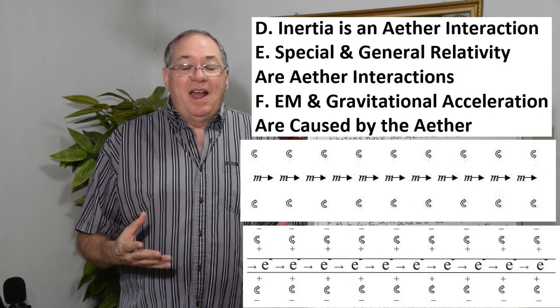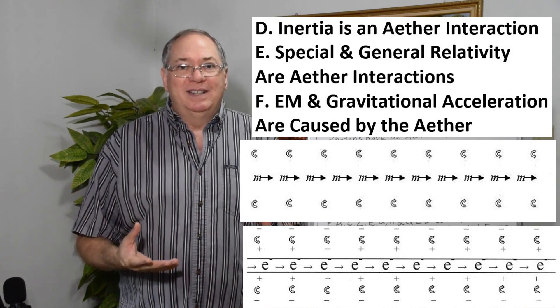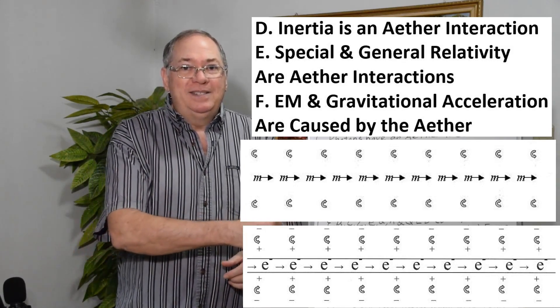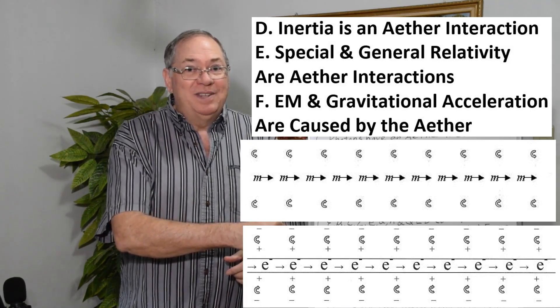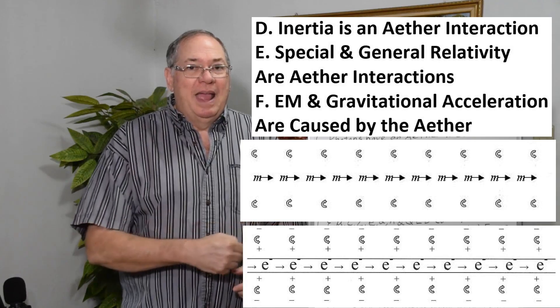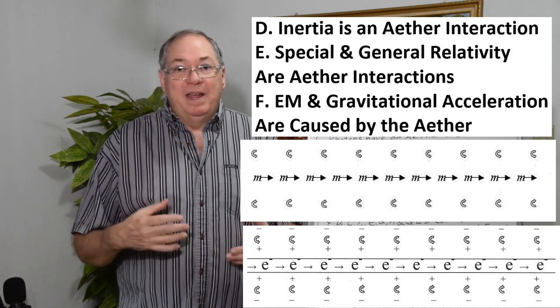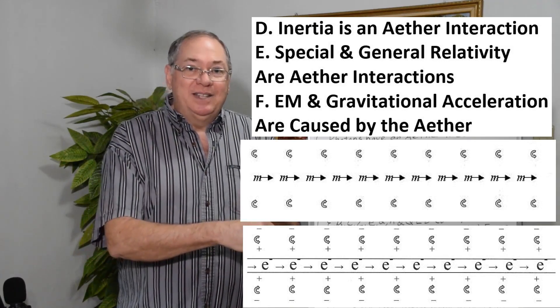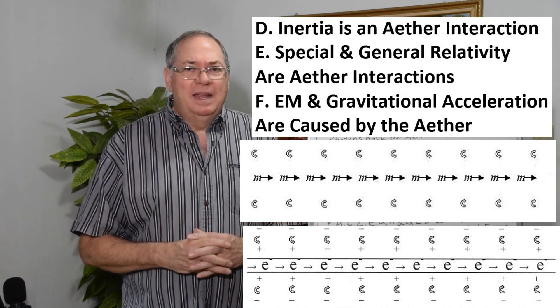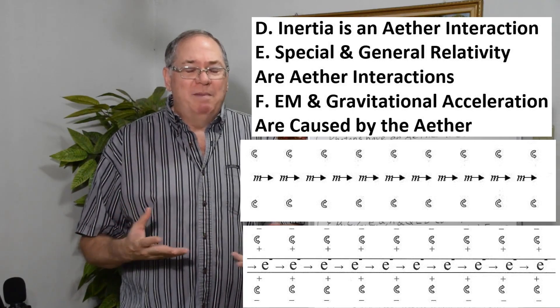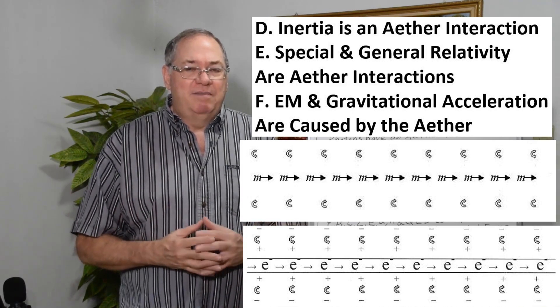And then inertia has to be an ether interaction. A body moves through space, it interacts with something that gives it inertia. And in the case of the quantum ether, it causes it to rotate, and its rotation causes the object to keep moving, is the best way to imagine it, a self-inductive effect.